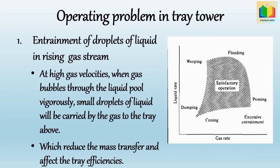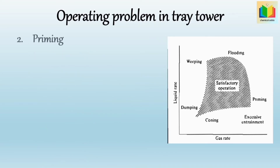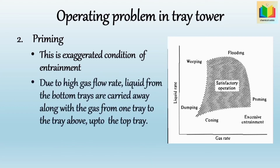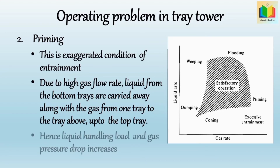The next operating problem is priming. This is an exaggerated condition of entrainment and occurs at a high gas flow rate. Due to the high gas flow rate, liquid from the bottom trays is carried away along with the gas from one tray to the tray above, up to the top tray. Due to this, froth persists throughout the space between the trays, and liquid carried up by gas recirculates between the trays, increasing the liquid handling load and the gas pressure drop.